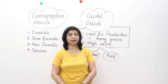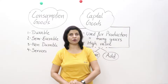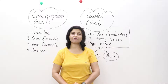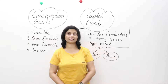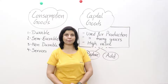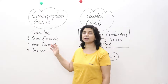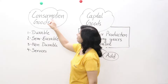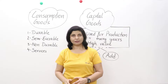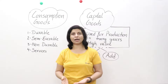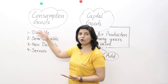Consumption goods and capital goods come under the classification of goods. We have already discussed intermediate and final goods, and now under the classification of goods we will discuss consumption goods and capital goods. Consumption goods — as the name suggests, it comes from consumer — the goods used by consumers are known as consumption goods, and they are of four types.